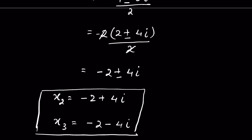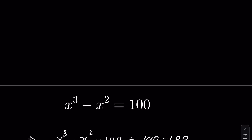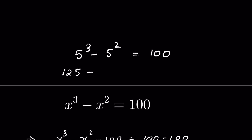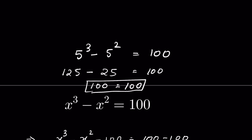The real solution is x equals 5. Let's verify: 5 cubed minus 5 squared equals 125 minus 25 equals 100. LHS equals RHS, so the answer is verified. How did you solve it? Let me know in the comment section. Thanks for watching.